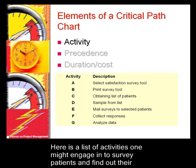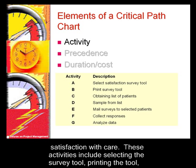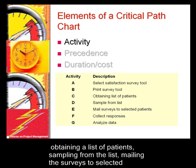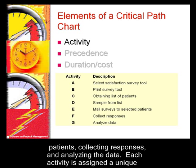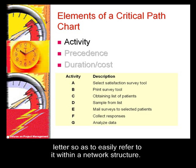Here is a list of activities one might engage in to survey patients and find out their satisfaction with care. These activities include selecting the survey tools, printing the tool, obtaining lists of patients, sampling from the list, mailing the surveys to selected patients, collecting responses, and analyzing the data. Each activity is assigned a unique letter so as to easily refer to it within the network structure.